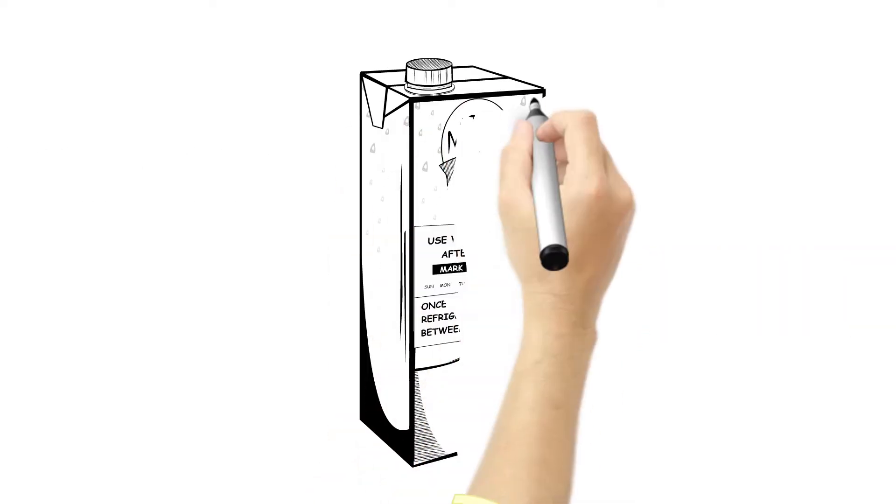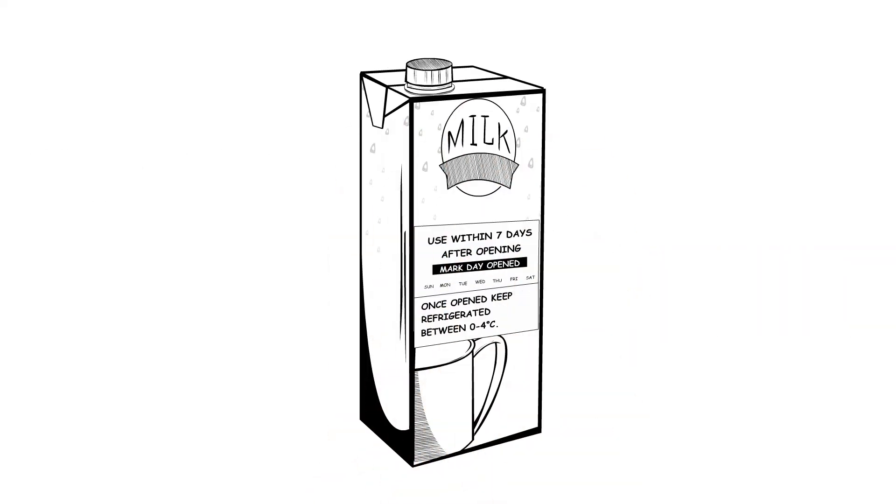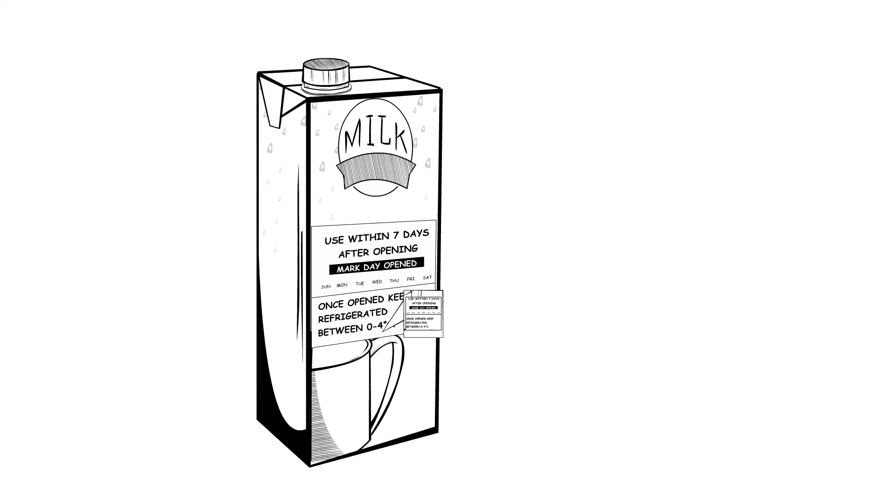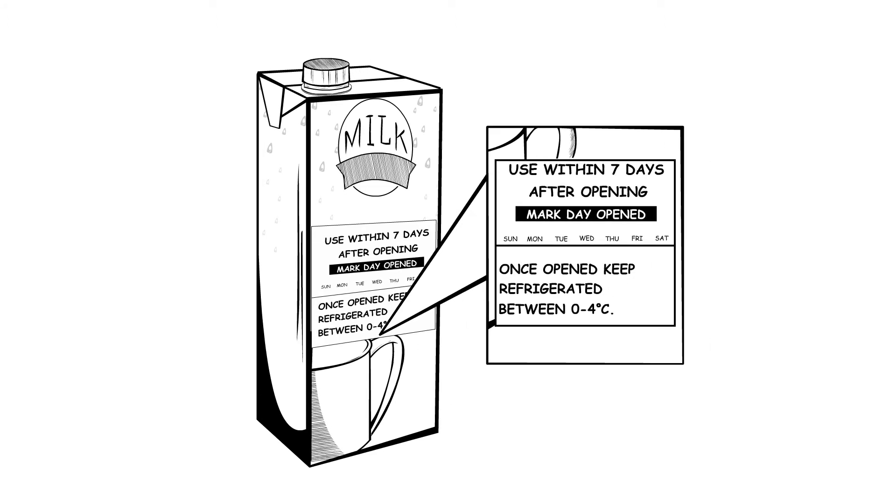Think about a carton of UHT milk. Before it is opened, it has a shelf-life of a year, even when kept at room temperature. But as soon as it is opened, the shelf-life gets much shorter and needs to be kept refrigerated.